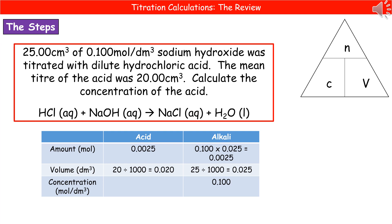To get the amount of our acid, look at the balanced equation and apply the same ratios. Since this is a one-to-one ratio, 0.0025 moles must also be the amount for our acid — fill in that box. That leaves just the concentration for our acid blank. Going back to our formula: amount in moles divided by volume gives concentration. So 0.0025 divided by 0.020 gives us 0.125 moles per decimetre cubed.